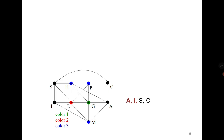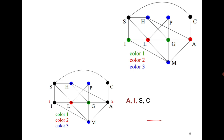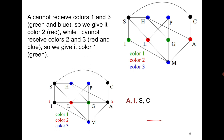Moving further, the next vertex is a. a is adjacent to blue and green but not adjacent to red, so color 2 can be given here. Then for i, it is adjacent to blue and red but not green, so color 1 can be given here. Then there remain s and c. s is adjacent to all three colors, so we need to introduce a new color — color 4. Then c is adjacent to color 2 and color 4, which means color 1 can be used for c.